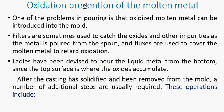Next is oxidation prevention of the molten metal. We must prevent oxygen from getting into the mold as molten metal is poured, because it can cause defects. To prevent oxygen being trapped into the cast: first, filters are used; and second, ladles have been devised so that the liquid can be poured from the bottom instead of from the top.